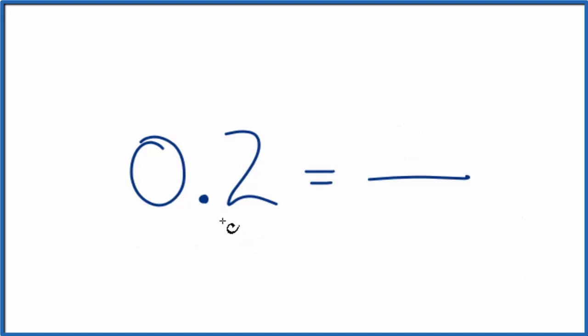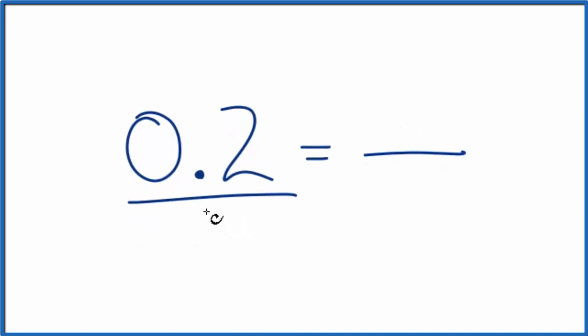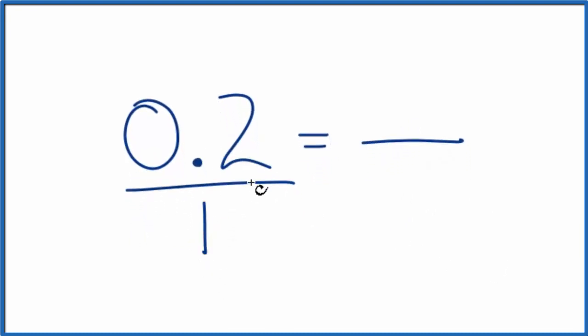First, let's think of 0.2 as 0.2 over 1. It's the same thing as 0.2, we're just dividing by 1, but now we have the start of fraction form.